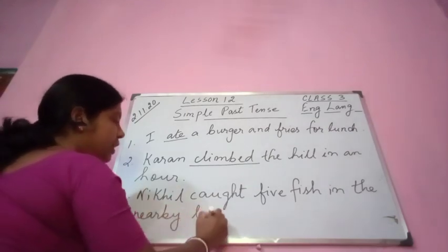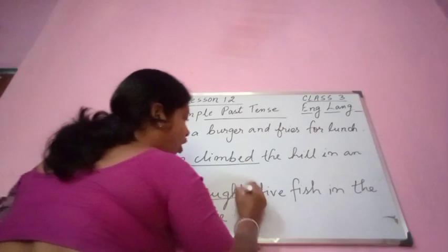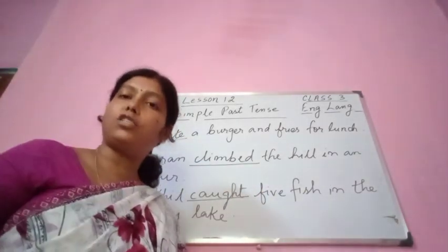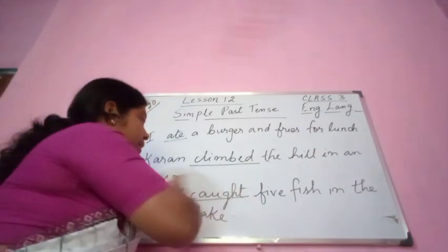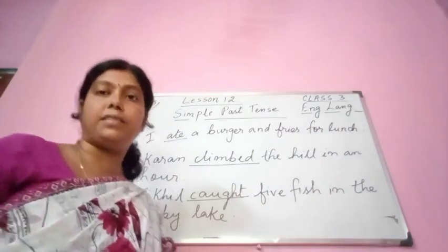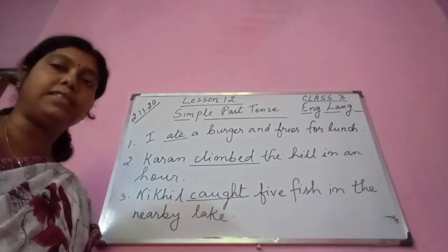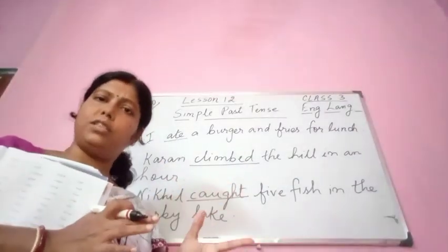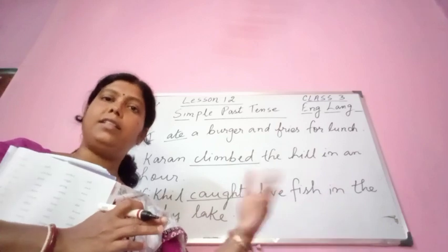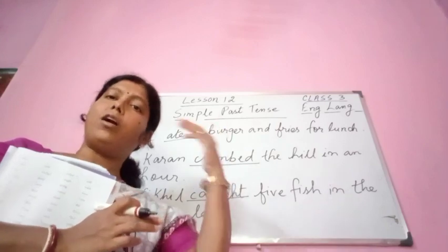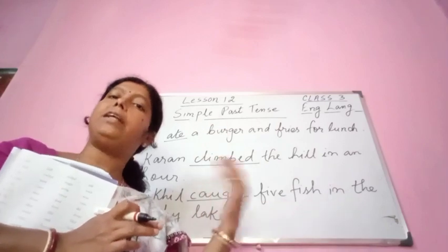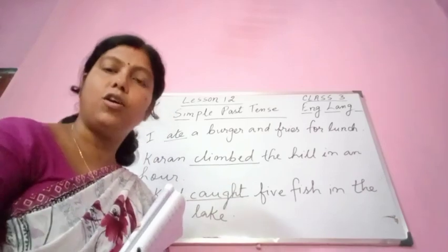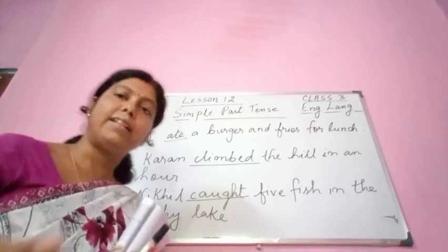The verb is 'caught'. The past tense of 'catch' is 'caught', so we can understand that this sentence is also in the past tense. These three sentences are in the past tense — their actions happened previously, in the past. We shall continue in the next class. Thank you.